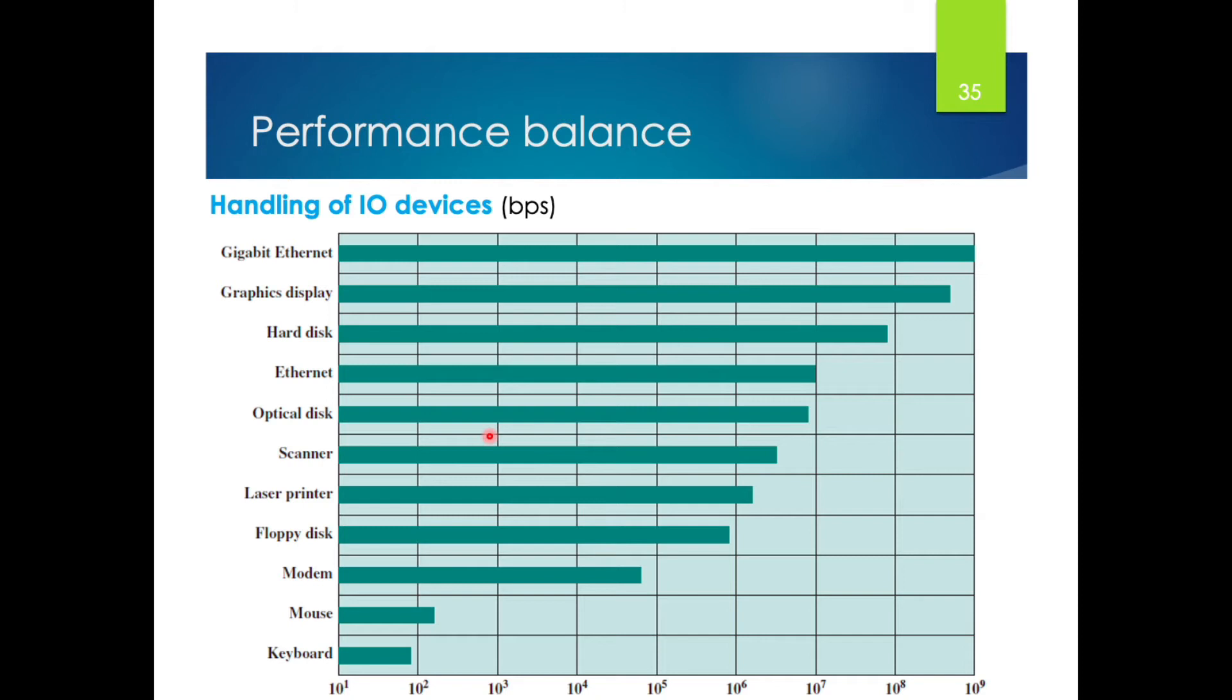The key in all this is balance. Design constantly tries to balance the throughput and processing demands of the CPU components, main memory, IO devices, and the interconnection structures. This design must constantly be rethought to cope with two constantly evolving factors. First, the rate at which performance is changing in various technology areas like the processors, the bus, the memory peripherals. This differs greatly from one type of element to another. Like you have seen, the difference between the processing speed of the CPU and the memory.